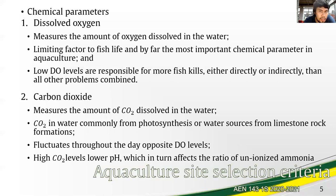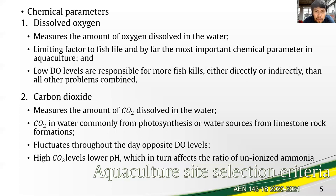Next is the carbon dioxide level — it is the measure of the amount of dissolved carbon dioxide in the water, that which comes from the photosynthesis of aquatic plants or water sources from limestone rock formations. The carbon dioxide level fluctuates throughout the day opposite the dissolved oxygen levels. Its increase lowers pH, which in turn affects the ratio of unionized ammonia, which is toxic to organisms in the water, particularly the culture species.